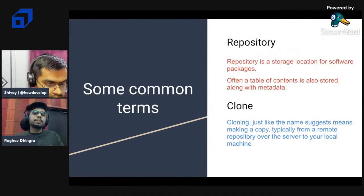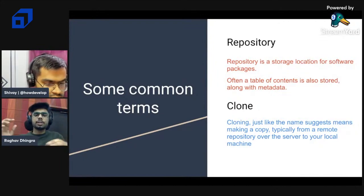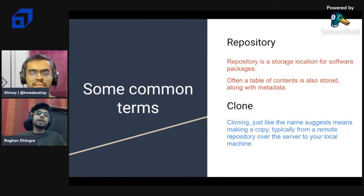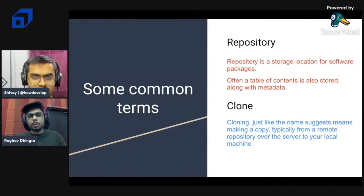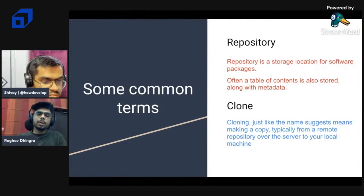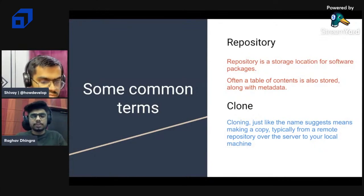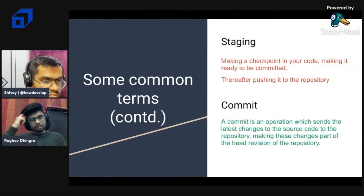A repository is a storage location where your code is handled - think of it as a folder containing your code base. Whenever we want to make changes to a project, we 'clone' the whole project from the repository. Cloning means copying the code from another system to our own computer, essentially creating a copy of that code base locally so we can make updates.